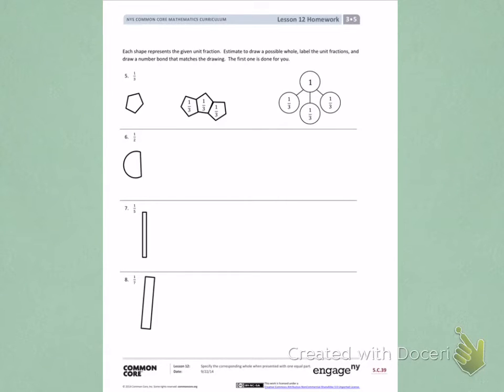So when I look at number 5, I see my unit fraction is one-third. The picture is representing one-third. So they added one-third, two-thirds, three-thirds, which in total gave one whole. They also represented that as a number bond, showing one whole at the top, and then one-third, two-thirds, three-thirds underneath.